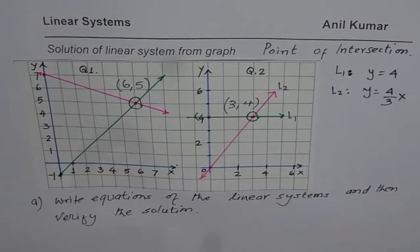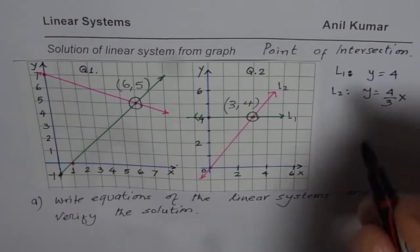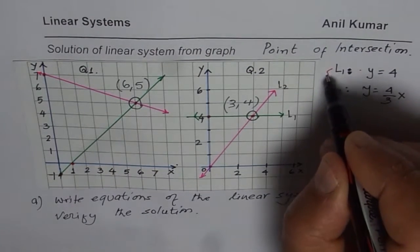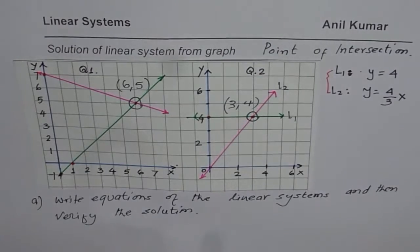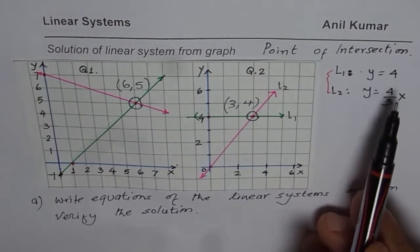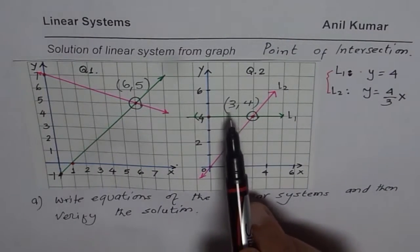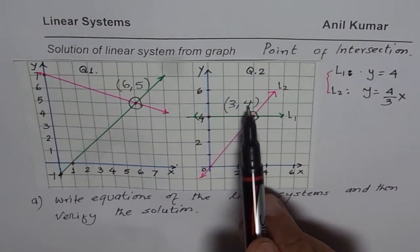That is a system which has two lines, lines 1 and 2. These are the two lines which form the system. Now to verify solution really means, when you substitute 3 for x, you should get 4 for y.